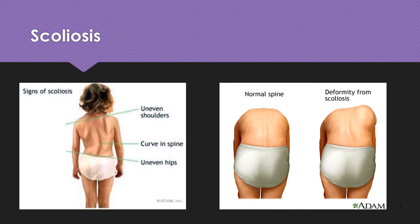For diagnosis, they typically do standing radiographs to determine the degree of curvature. You'll have asymmetry of the shoulder height, scapular or flank shape, or hip height. In addition to the primary curve, a compensatory curve is often present to align the head with the gluteal cleft.